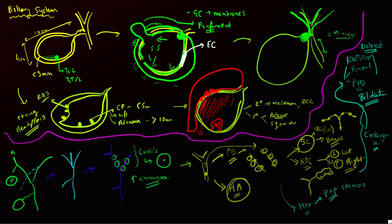Biliary cystadenoma is a rare tumor typically seen in older females with a propensity for the right hepatic lobe. It appears as a cystic mass with multiple internal septations. It is benign but has a malignant counterpart — biliary cystadenocarcinoma — which cannot be differentiated on imaging, so these tumors almost always require surgical resection.